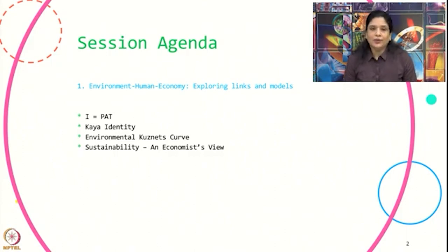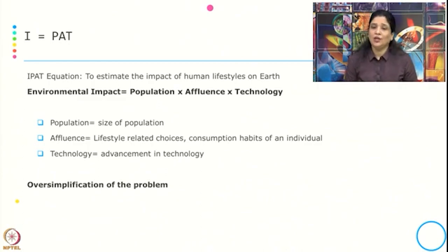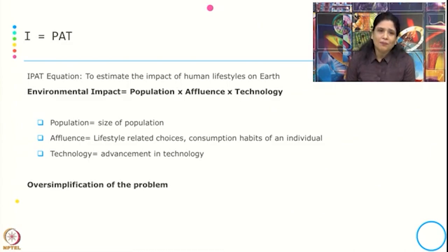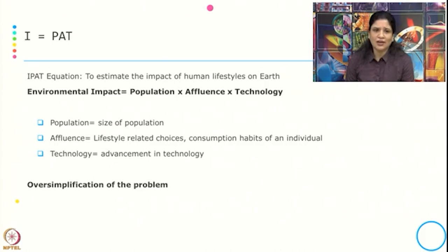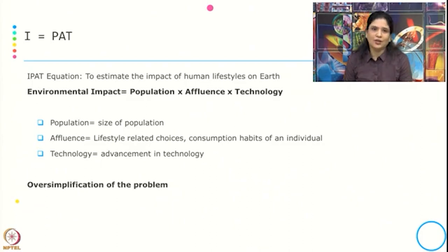To start with, let us see the first model creating a link between human, environment and economy. This is known as IPAT, and the equation is: Environmental Impact equals Population, Affluence, and Technology. So I stands for impact, P stands for population, A stands for affluence, and T stands for technology.